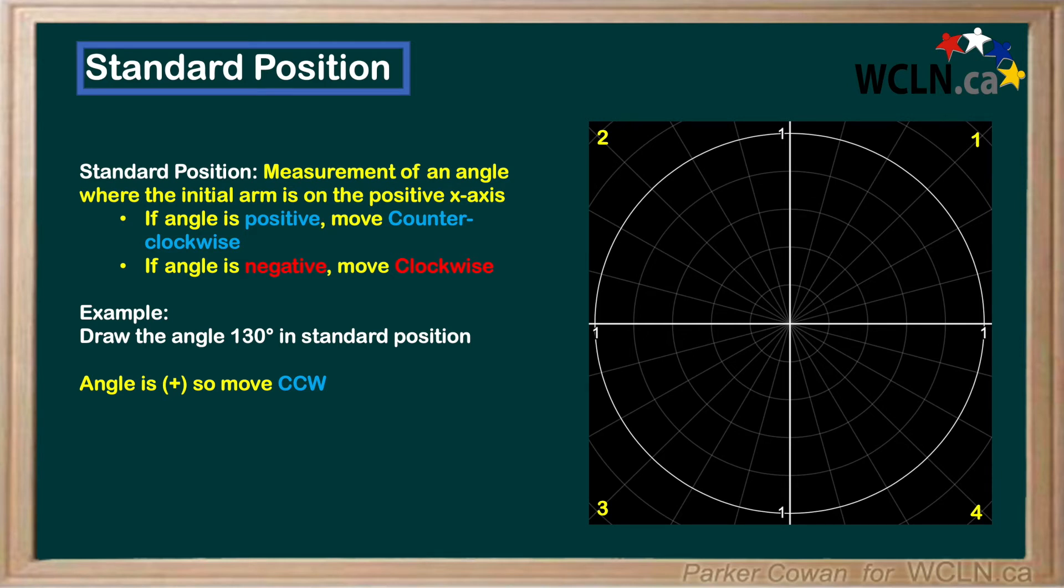Next we can see the angle is greater than 90 degrees, so we need to figure out which quadrant to put our terminal arm in. Moving one 90 degree increment in the counterclockwise direction has us in the second quadrant. If we were to move two 90 degree increments, we would be at 180 degrees, which is too much. So we know that the angle is going to fall in the second quadrant.